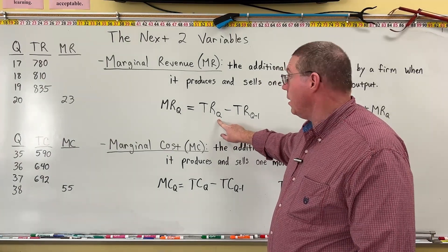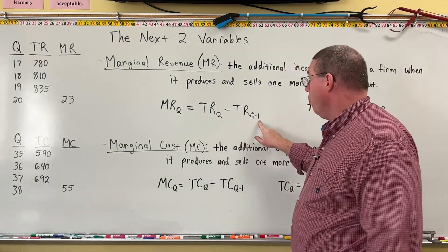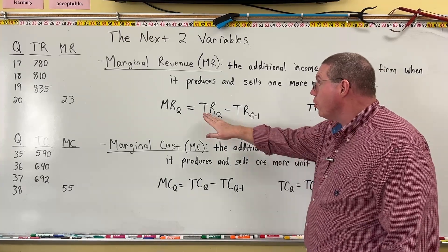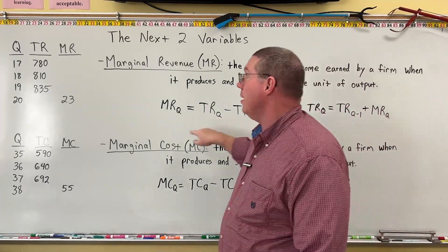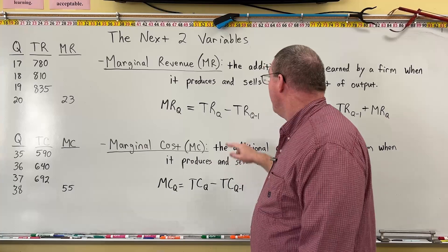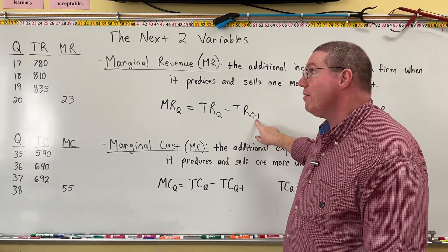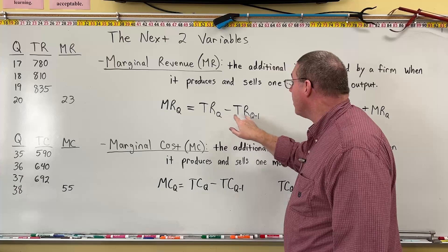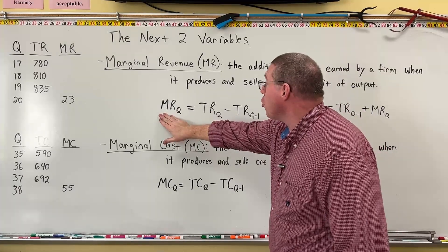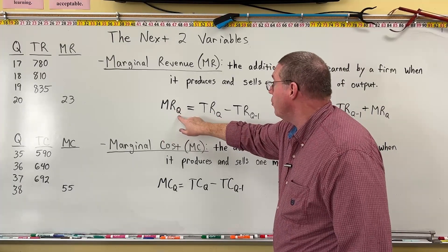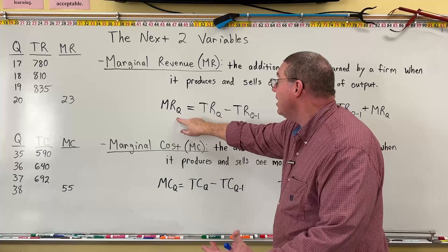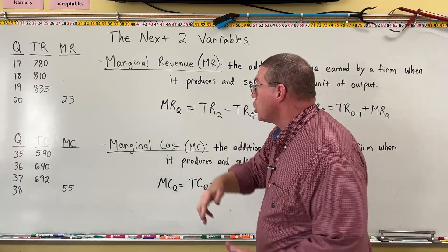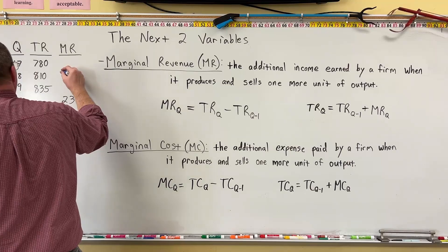The way we found that: we take the total revenue for Q=18 and subtract the total revenue for Q minus 1, which is 17. So total revenue of 18 is 810, minus total revenue of 17, which is 780. 810 minus 780 is 30. That is the marginal revenue for Q=18. So the marginal revenue of the 18th unit is 30.